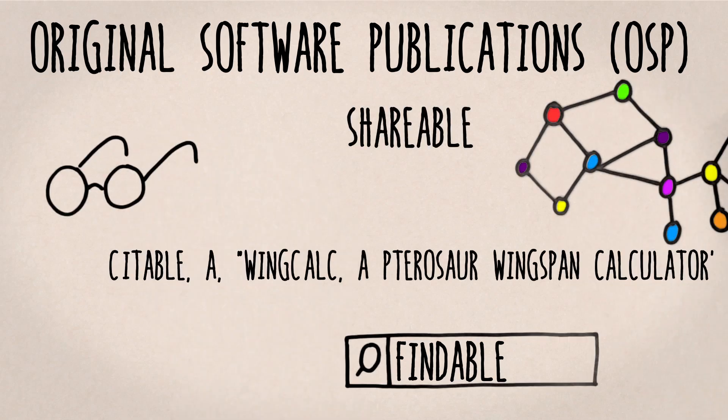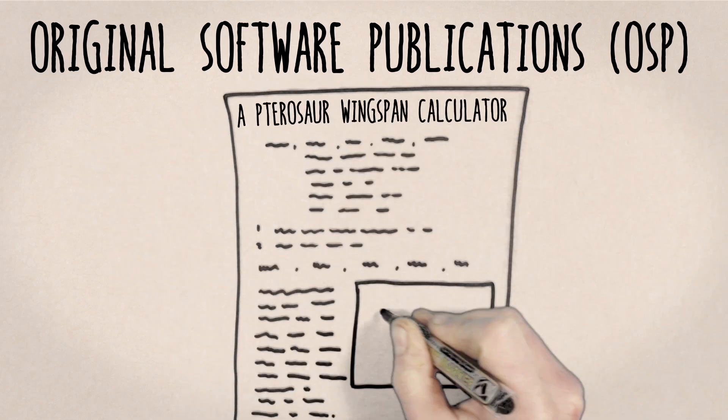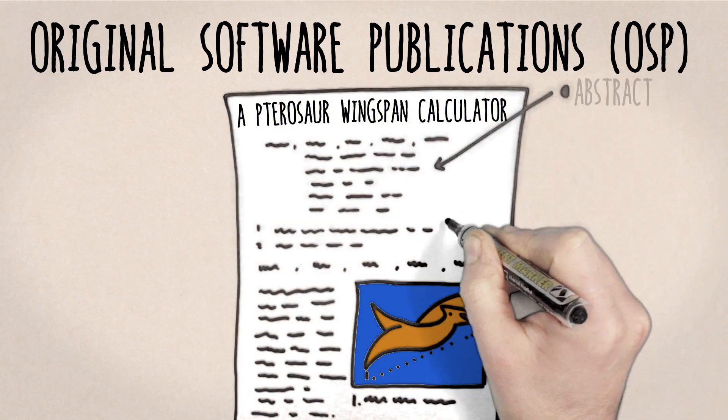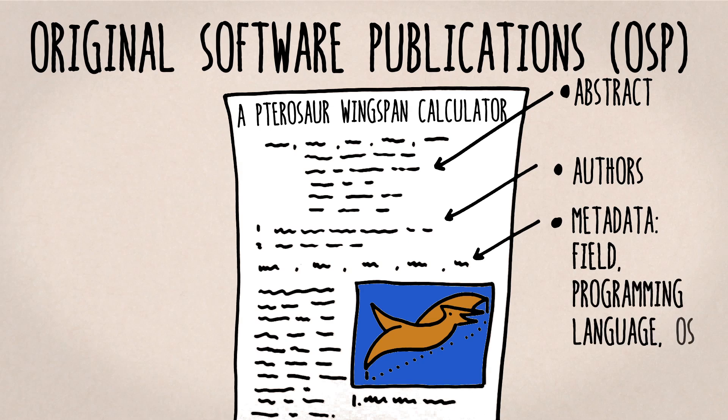An OSP is a brief description of the software, including an abstract, references and software metadata, such as the field of application, programming language, operating system or a link to the actual code in a software repository like GitHub.